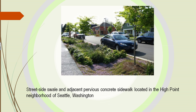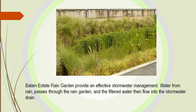Cities now can have swales along the side of their streets. Here's one in Seattle — it has plants, and you can see how it is dropped down the center so that as it rains the water fills the area and slowly percolates out. The plants help remove the contaminants inside. It's called a rain garden, and rain gardens also provide effective stormwater management. Water passes into this area where it's held by the plants and earth, and then the filtered water gradually flows into a stormwater drain.